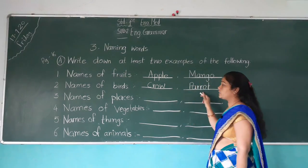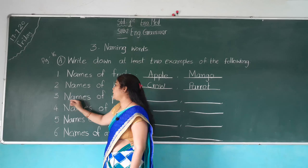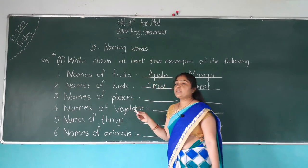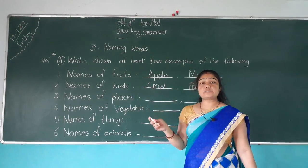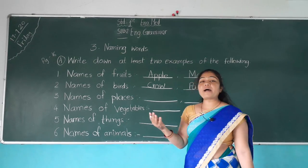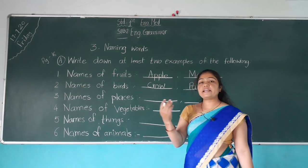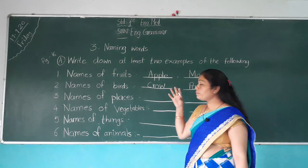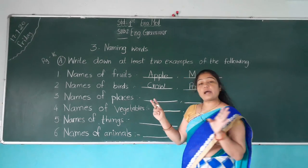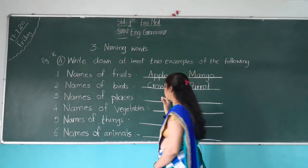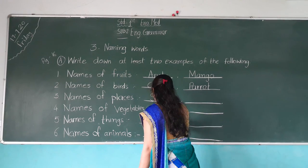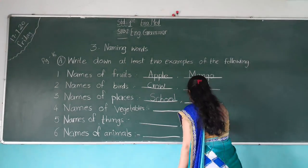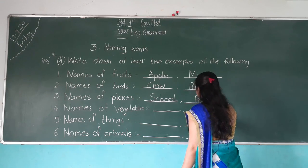Number three: Names of places. Two names we have to write of places. Places means school, park, hospital, bank — everything comes in places. We can also write Halol, Kalol, Baroda. Everything comes in places. Places means a location. First we write school — S-C-H-O-O-L. Then another — park — P-A-R-K.